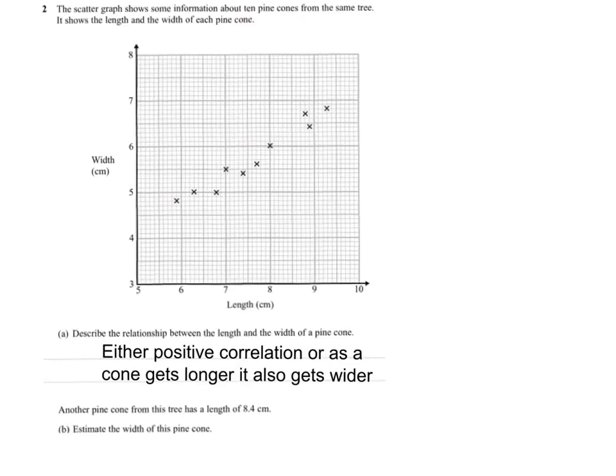Part B, another pine cone from this tree has a length of 8.4. Estimate the width of this cone. So looking at our squares, we've got 10 squares between 8 and 9. So 8.4 will be the fourth square and it needs to be in line with the other dots.